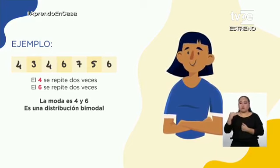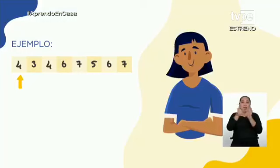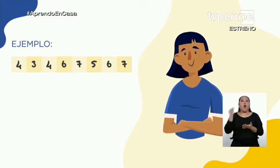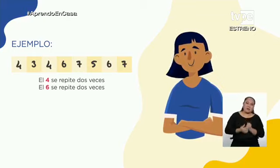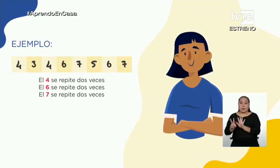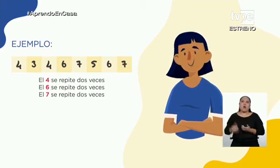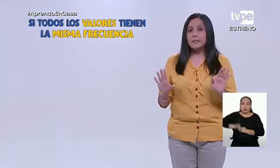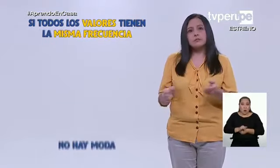¿Y qué pasaría si tenemos los datos: 4, 3, 4, 6, 7, 5, 6 y 7? Los que más se repiten son el 4 dos veces, el 6 dos veces, y el 7 dos veces. Entonces tenemos tres valores que más se repiten. En este caso, estamos ante una distribución de datos multimodal. Si todos los valores tienen la misma frecuencia, es decir, todos los valores se repiten la misma cantidad de veces, entonces no hay moda.